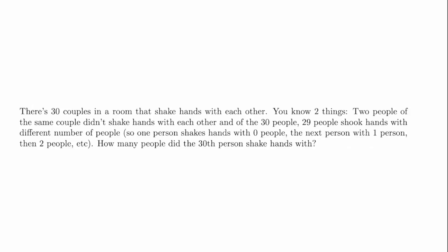There are 30 couples in a room that shake hands with each other. You know two things: two people of the same couple don't shake hands with each other, and of the 30 people, 29 people shook hands with a different number of people. So one person shakes hands with zero people, the next with one person, then two, and so on. How many people did the 30th person shake hands with?